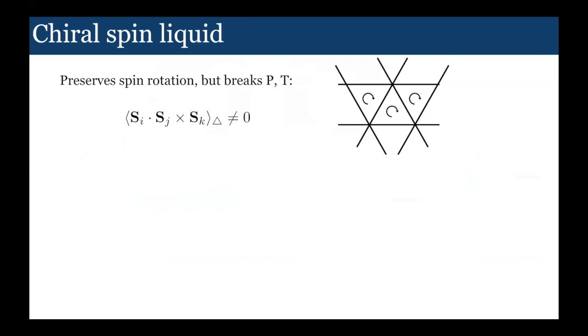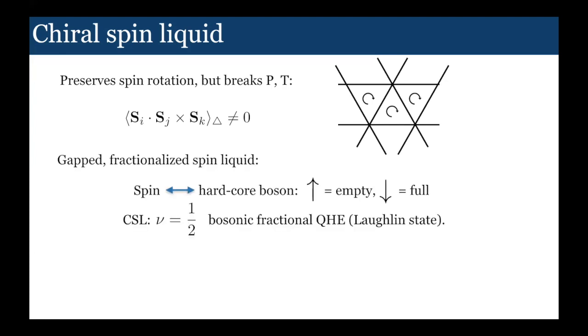Why do we call it the chiral spin liquid? The time reversal symmetry breaking can actually be detected by a local order parameter, which is just the spin chirality. You look at the triple product of the spin along a plaquette. This is odd under both time reversal and mirror symmetry, but it preserves the combination of the two, so that's why it's a chiral order.